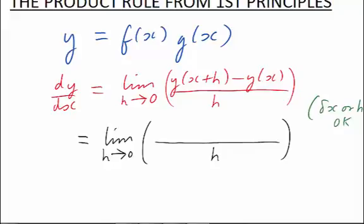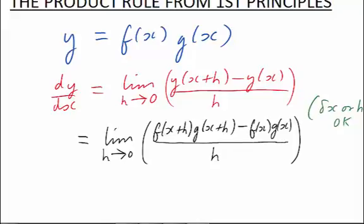At x plus h, we will have that y of x plus h is the same as f of x plus h times g of x plus h. So we write that down, and then we have to subtract y of x. But y of x is just f times g. So there's the expression we have to deal with.